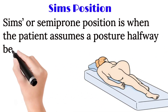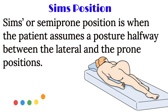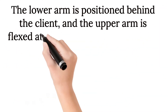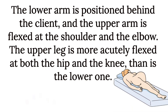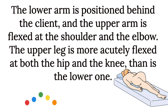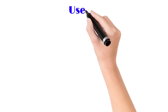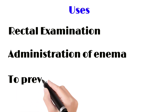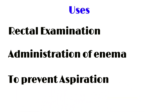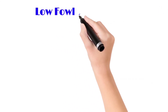Next is the Sims position, also called semi-prone position — the patient assumes a posture halfway between the lateral and prone positions. The lower arm is positioned behind the client and the upper arm is flexed at shoulder and elbow. The hip is slightly elevated, making the rectal area clearly visible. Uses include rectal examination, administration of enema, and prevention of aspiration.